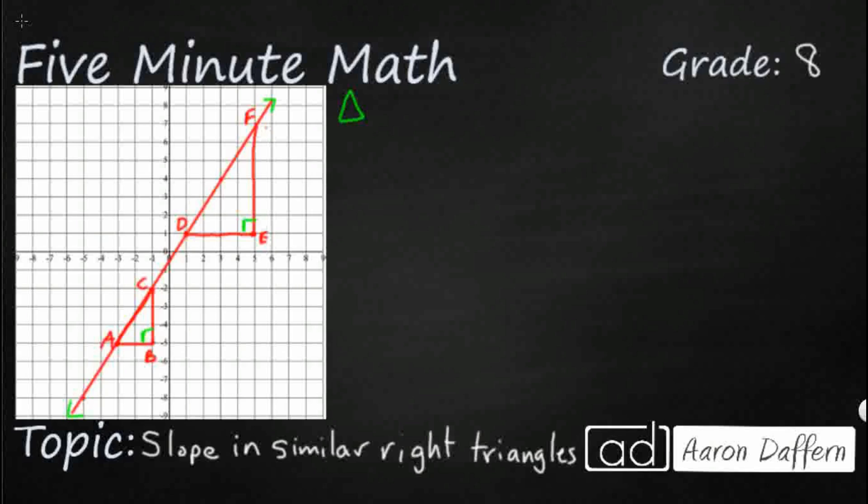So we're going to say that triangle ABC is similar - it means it's the same shape. They are proportional. They just happen to be different sizes or scale differently to triangle DEF.